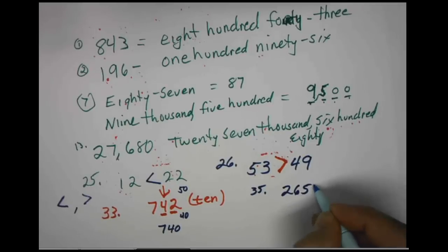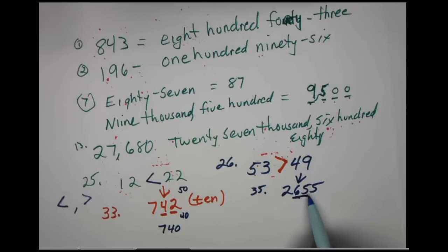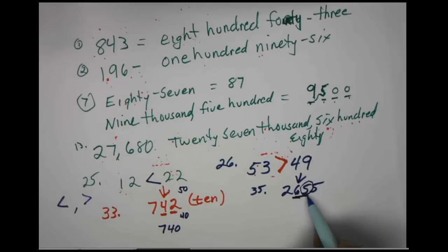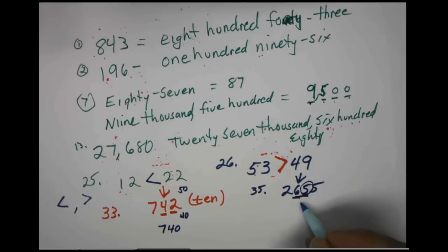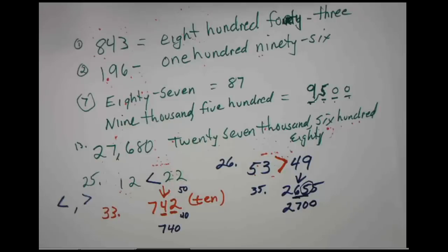Problem number 35: we have 2,655, rounding to the nearest hundred. 6 is in the hundred spot. We take that value and the value to the right — looking at 65. We're really comparing that 5. Five rounds up, so 65 rounds to 70. Everything in front stays the same, everything behind goes to zeros. So 2,655 rounded to the nearest hundred becomes 2,700.